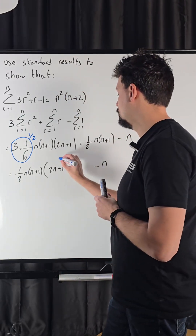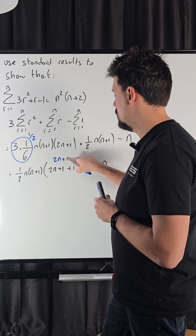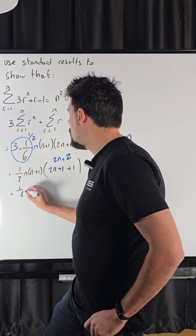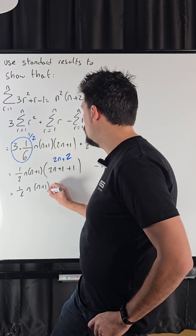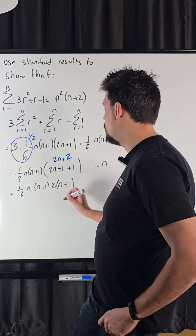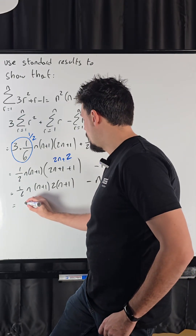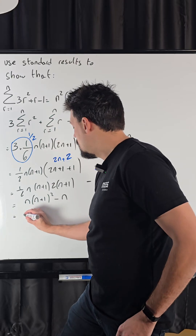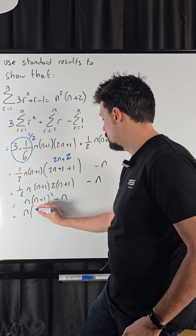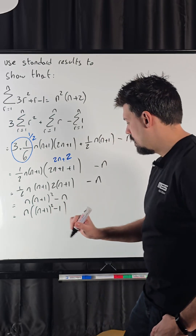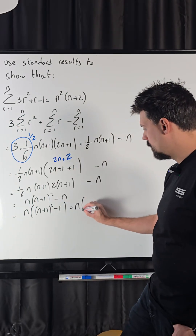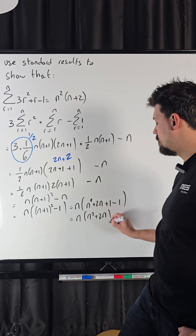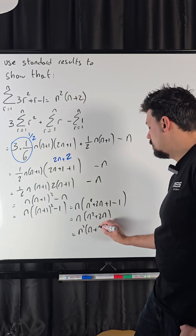This here is 2n plus 2. So this is one half times n plus 1 times 2 times (n plus 1), which simplifies to give me n(n+1) squared minus n. Let's take out the n and multiply this out: n squared plus 2n plus 1 minus 1. So this gives us n times (n squared plus 2n), factorize out the n: n squared times (n plus 2).